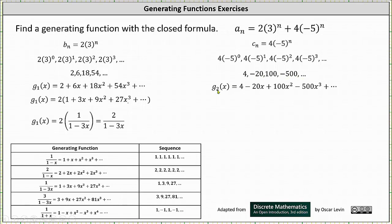This indicates the generating series for the sequence is g2(x) equals 4 − 20x + 100x² − 500x³ + ... On the right side we have a common factor of four. Factoring four from the right gives us g2(x) equals four times the quantity (1 − 5x + 25x² − 125x³ + ...).